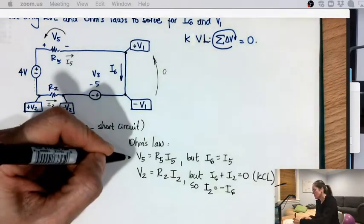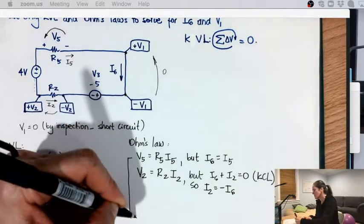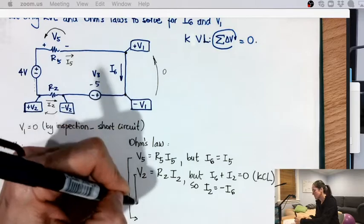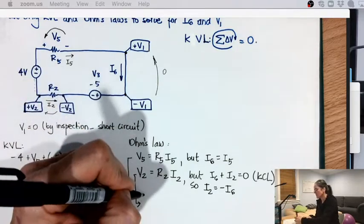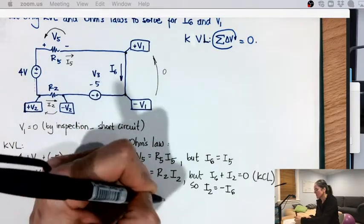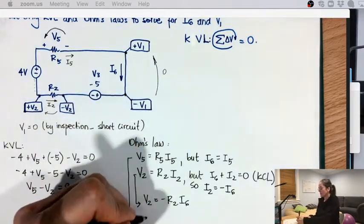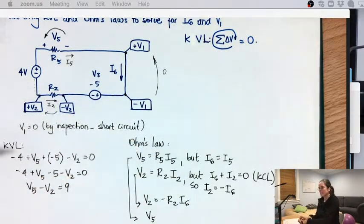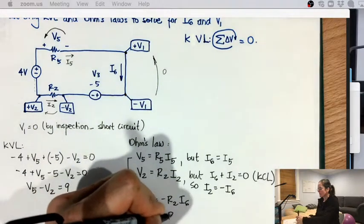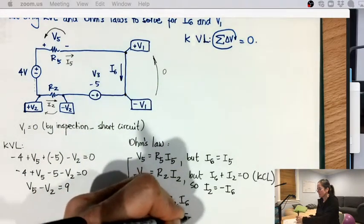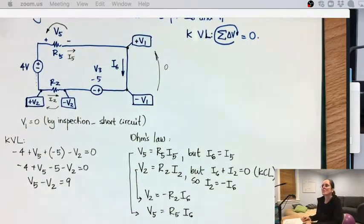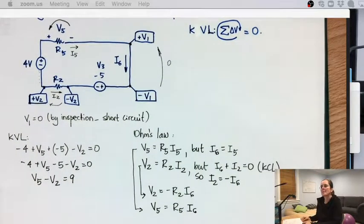So now I'm going to rewrite these two Ohm's laws down here as a function of I6. So it's going to be V2 is minus R2 I6 and V5 is R5 I6. If this is not clear, please post some Piazza question about it.